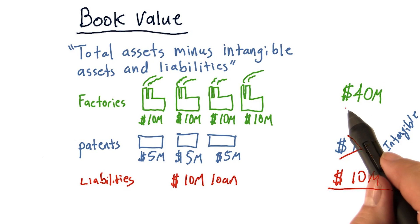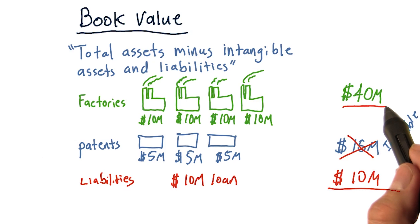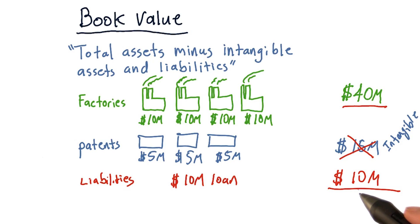So altogether, we've got our total assets minus intangible assets, which is $40 million, and liabilities minus this $10 million. So in this case, this company's book value is $30 million.